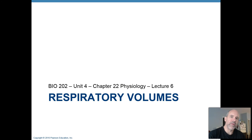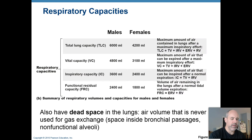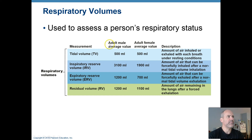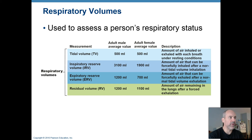Lecture number six for chapter 22 on the respiratory system. We're going to talk about some respiratory volumes — terminology you will probably encounter as you continue in your health sciences education. There are different respiratory lung volumes and capacities, which are measurements of combinations of lung volumes. These can be measured with an instrument called a spirometer and used to assess how well a person is ventilating, whether their lungs are working properly, and if they have obstructions or restrictions to airflow.